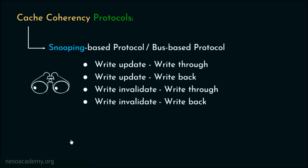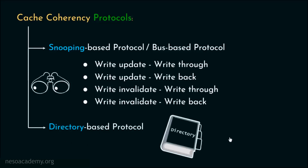The second type is called the directory-based protocol. Here a centralized directory is maintained to keep track of data items, and for every processor private directories are also maintained to help achieve coherency. The main difference is that snooping protocols use broadcast messages over a shared bus, whereas directory-based protocols connect nodes using a scalable interconnection network implementing point-to-point communication.